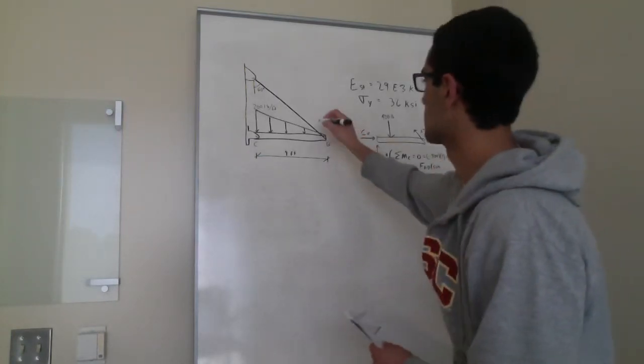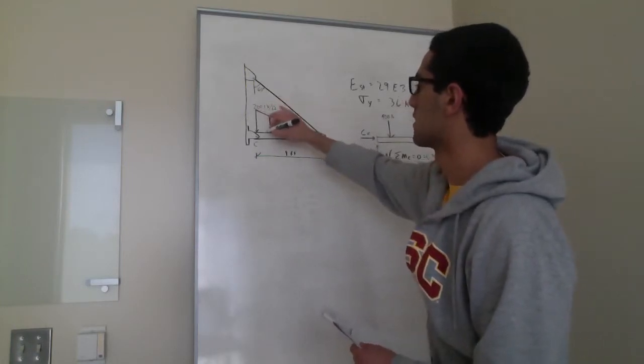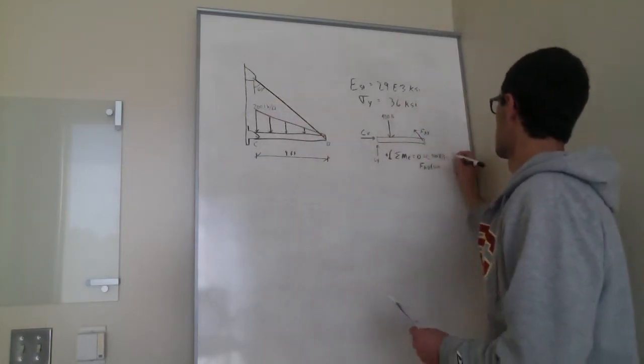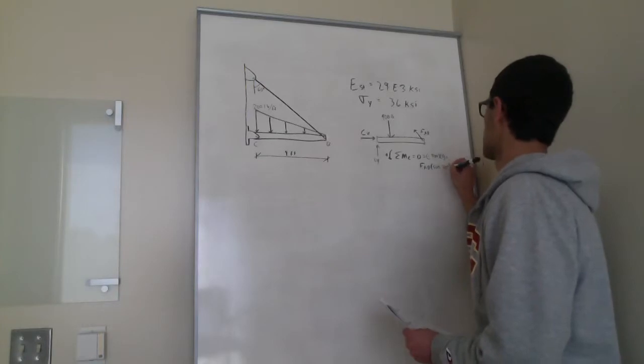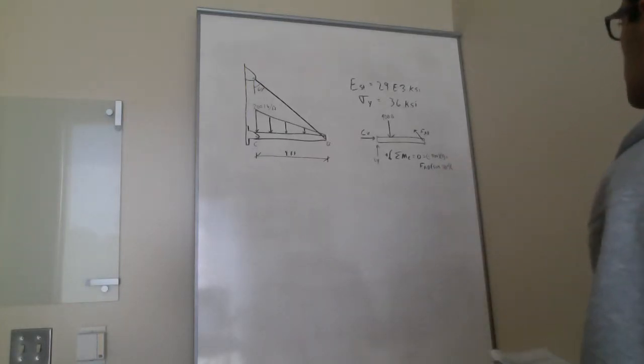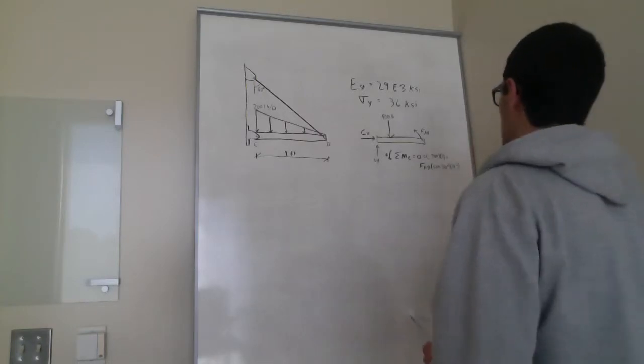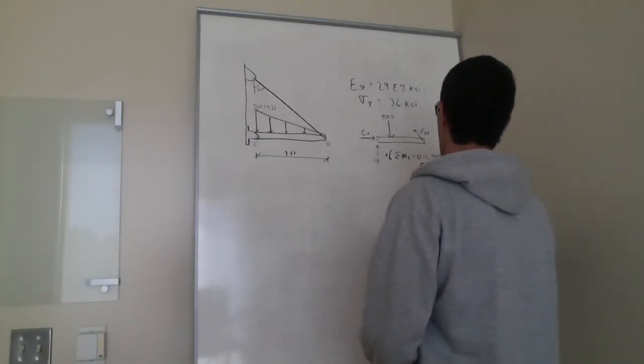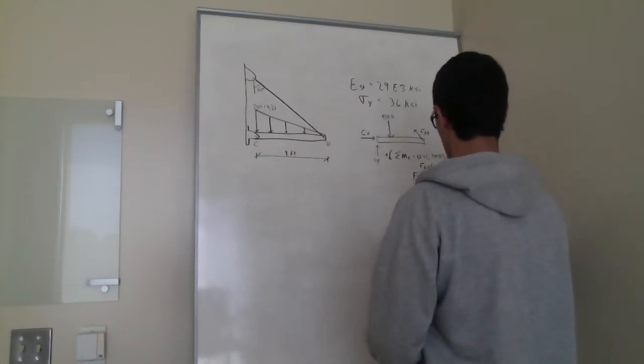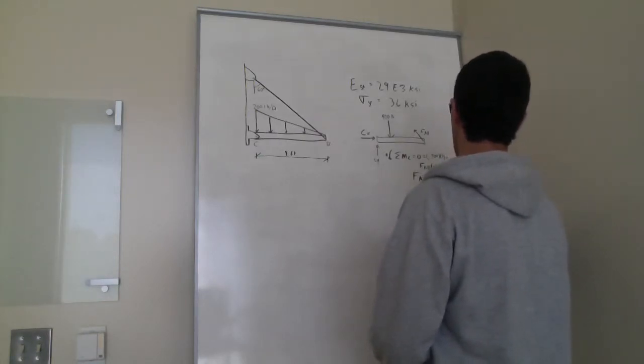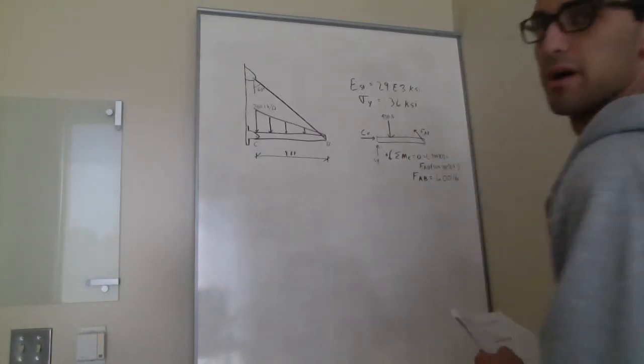So that angle is 30 degrees. That's 90, that's 30 right there. 30 degrees times the distance which is 9 feet. So we get FAB equals 600 pounds.